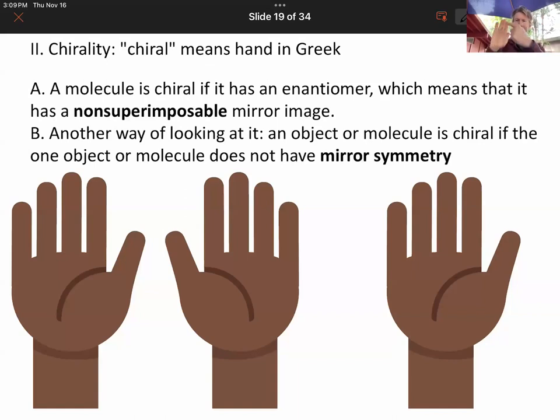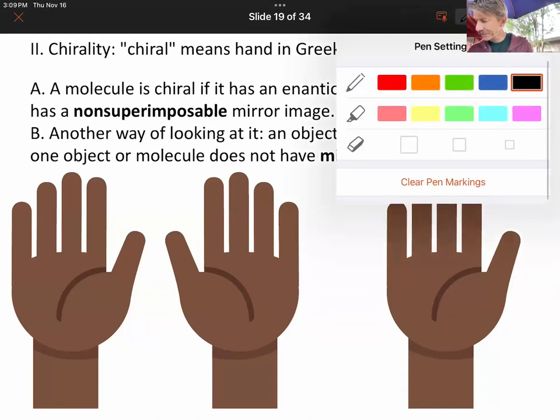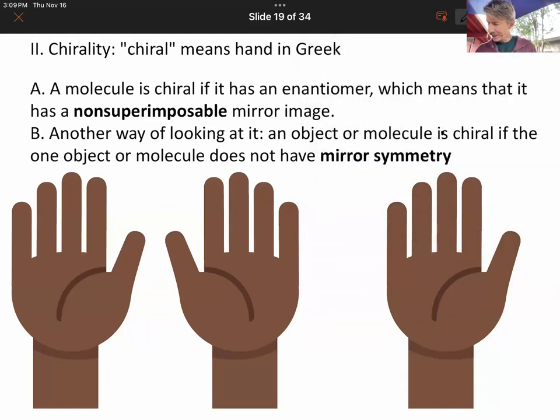Mirror symmetry means you can draw a line through the object and that one side will reflect to be the same as the other. And in this particular case, then you cannot draw a line down the middle and have this spot be exactly the same as that spot, this spot be exactly the same as that spot.